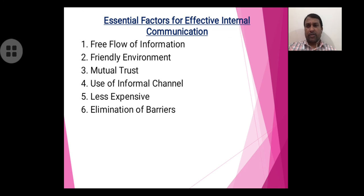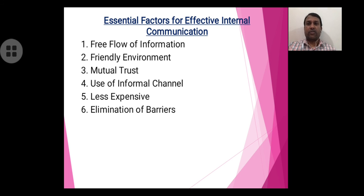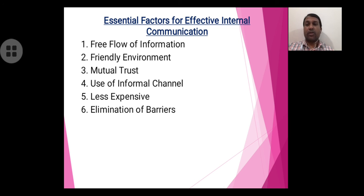Number 6: Elimination of Barriers. We need to eliminate communication barriers for effective internal communication. So in summary, the essential factors are: free flow of information, friendly environment, mutual trust, use of informal channels, less expensive communication, and elimination of barriers.